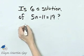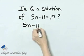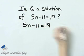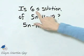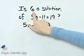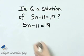So here's my equation: 5n minus 11 is equal to 19. Let's see if 6 is a solution. Let's replace n with this proposed solution number.